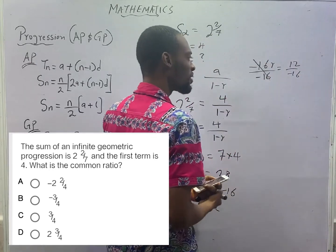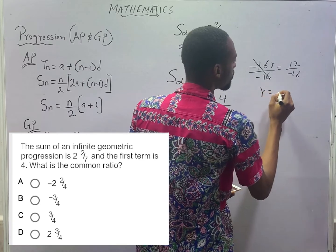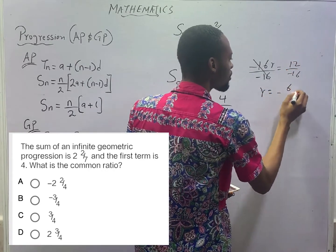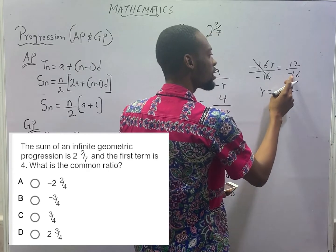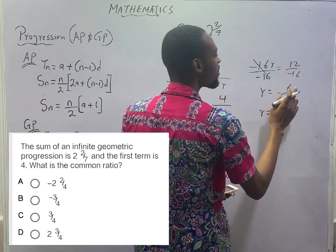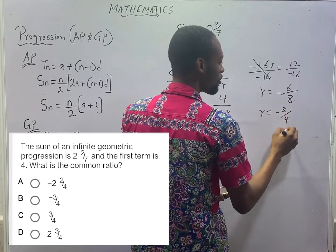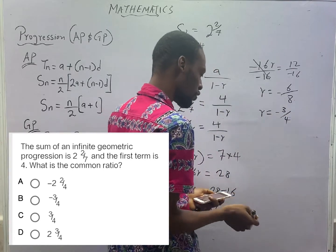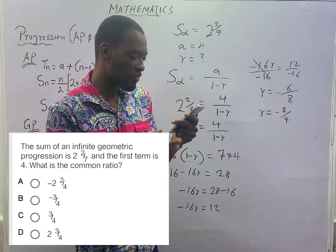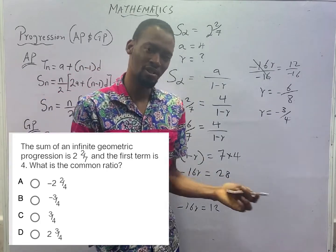Minus 16 divided by minus 16 is 1. R becomes -12 divided by 2 is -6, 16 divided by 2 is 8. R equals -6 divided by 2 is -3 over 8 divided by 2 is 4. R equals -3/4. That is the correct option. Option B is correct.